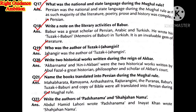Write a note on the literary activities of Babur. Babur was knowledgeable in Persian, Arabic, and Turkish, and he wrote Tuzk-e-Babari in the Turkish language. Who was the author of Tuzk-e-Jahangiri? Name two historical works during Akbar's reign — Abu'l-Fazl was a great historian, philosopher, and scholar in Akbar's court. Books translated into Persian during Mughal rule included Mahabharata, Ramayana, Arthashastra, Rajatarangini, Puranas, Tuzk-e-Babari, and the Bible.